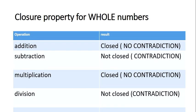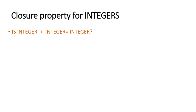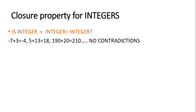You can see the results for closure property of whole numbers on screen. Next we have integers. As you know, integers include all numbers from positive whole numbers to negative whole numbers. Let us discuss addition of two integers — when we add two integers we will definitely get an integer.